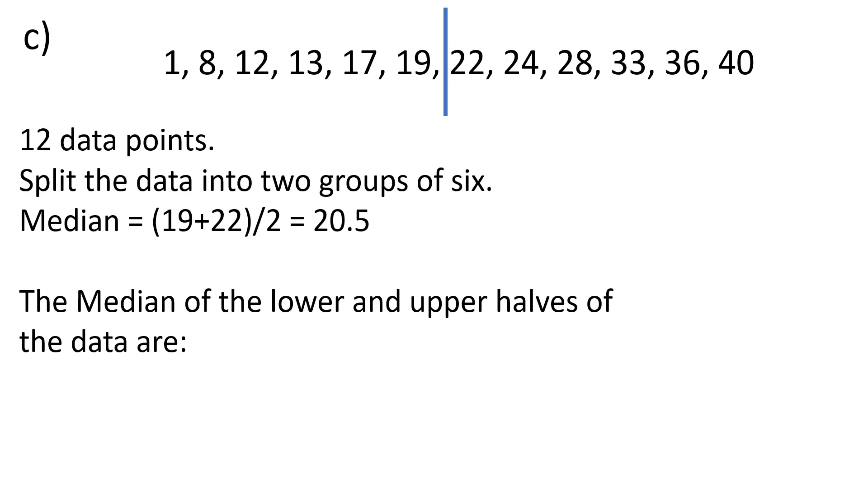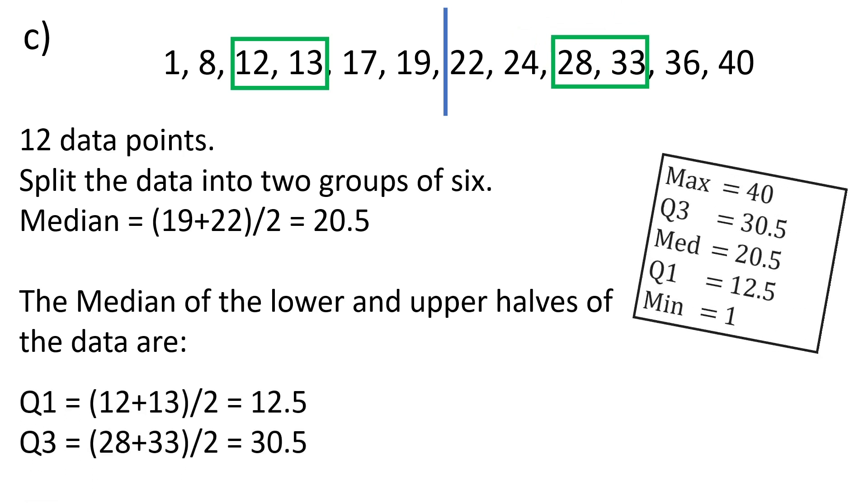so the median is the average of the middle two of those six. That's Q1. Q3 is the median of the upper half—the average of those two data points. We do the calculation and get our five number summary.